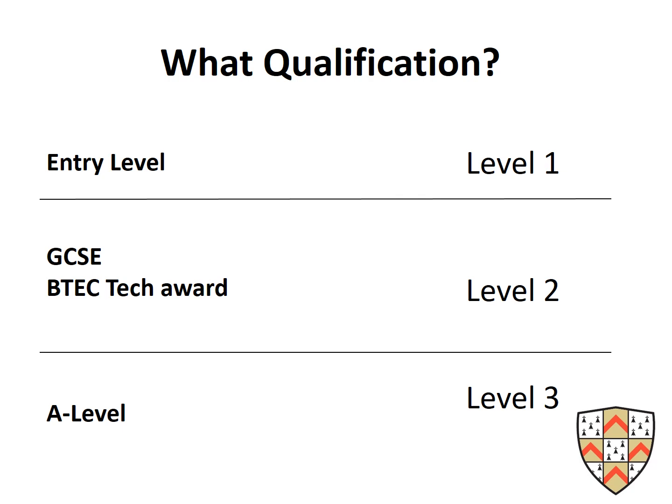There are three levels of qualification. Level 1 is entry level, which is below GCSE, and is used when students might really struggle to access a GCSE course. The majority of courses in Key Stage 4 are GCSEs or BTECs — all Level 2 equivalent qualifications. Level 3 is A level, which will be done in Year 12 and 13.